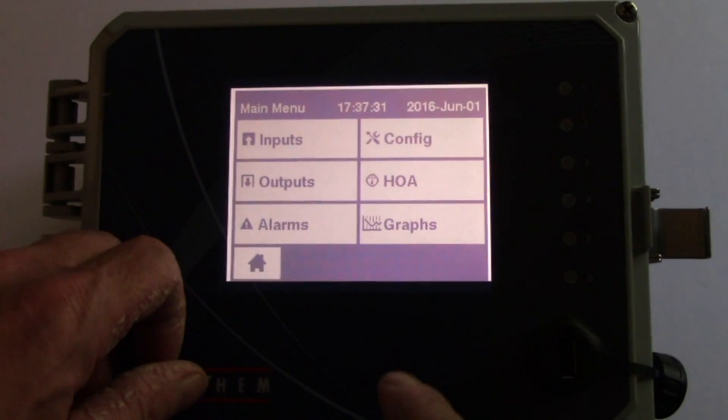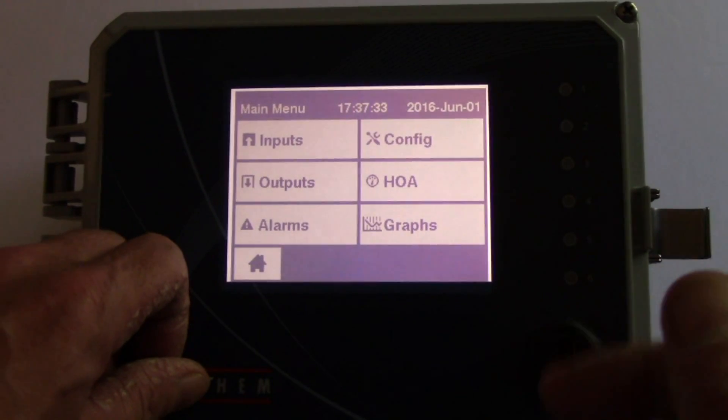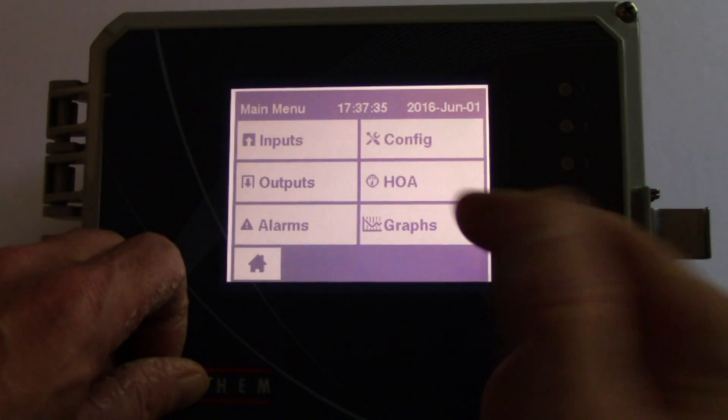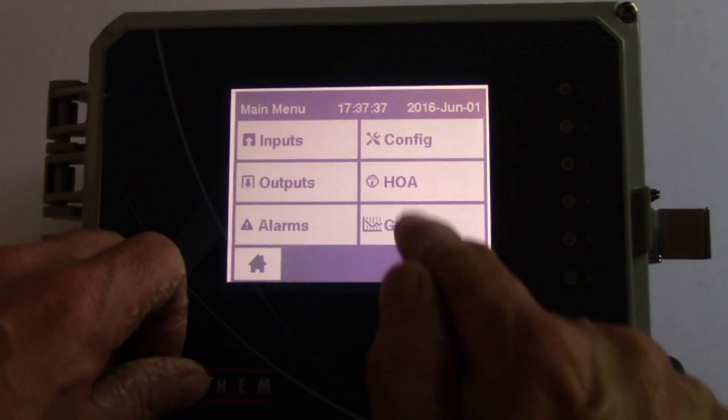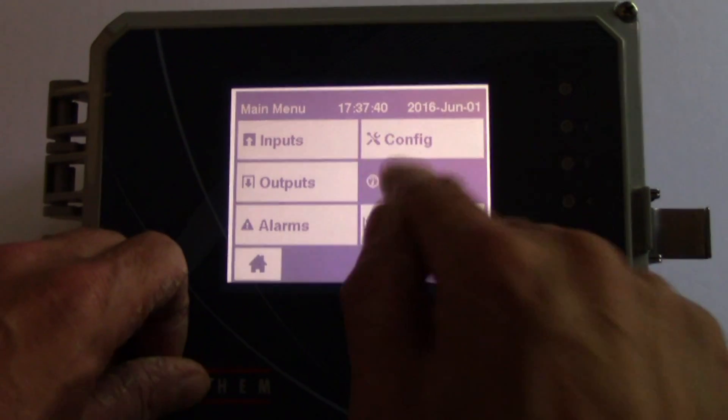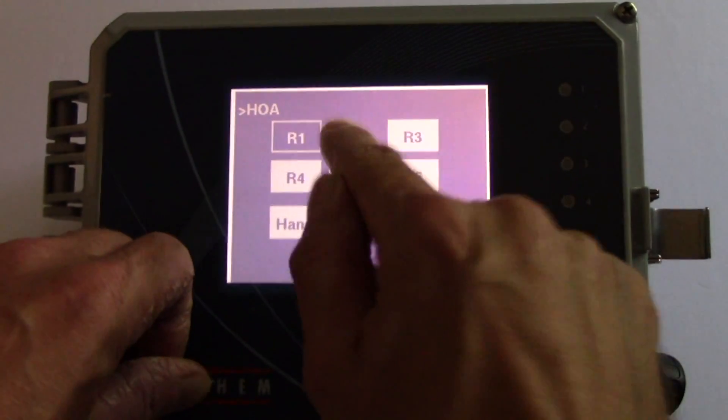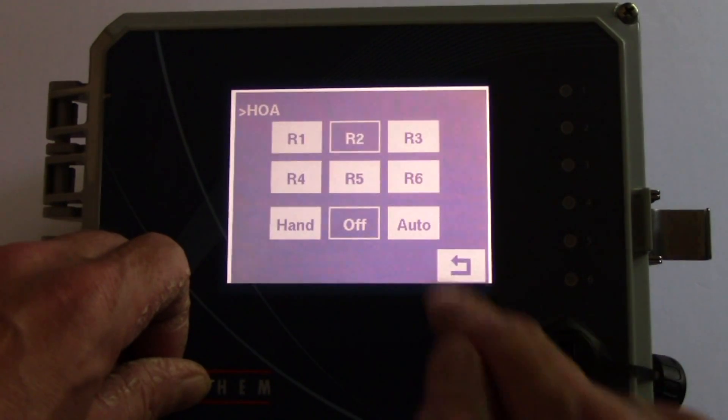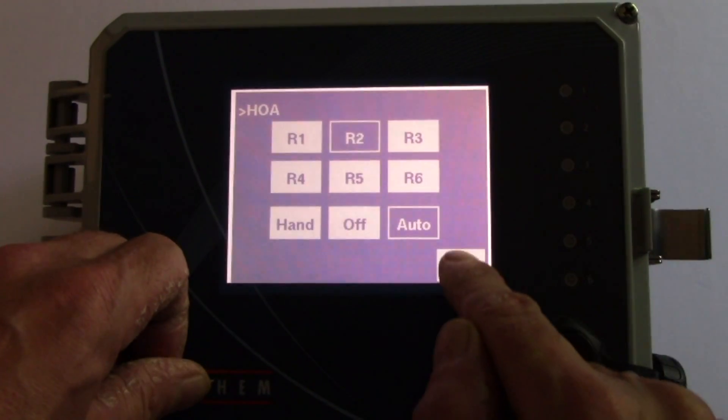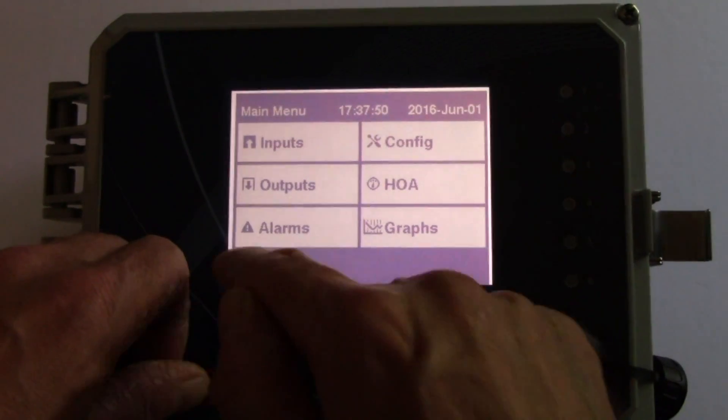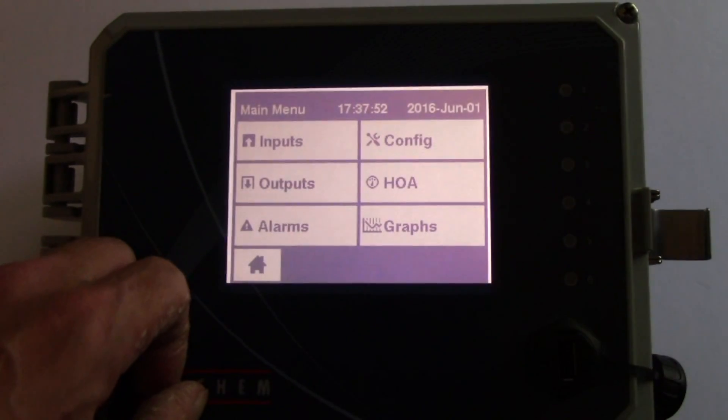Go back to the main menu. And after you make any changes in the modes for any relays, double check and make sure they're on auto and not off. So press the HOA, relay 1 is off, you want that auto. Relay 2 is off, and you want that to be in auto as well. And you can go back to the main menu.